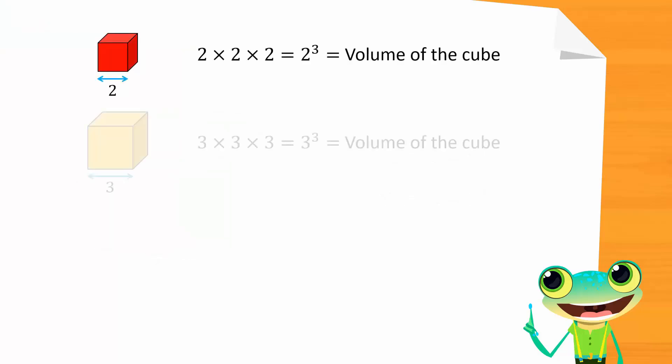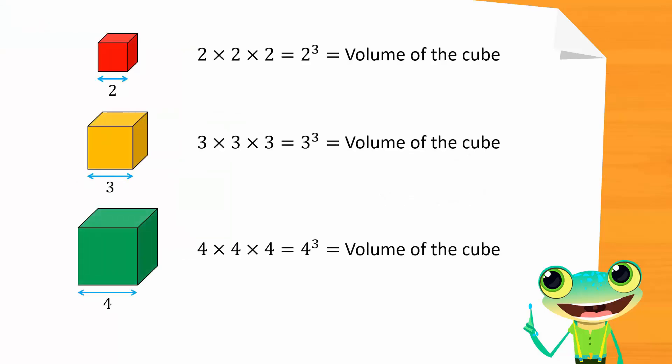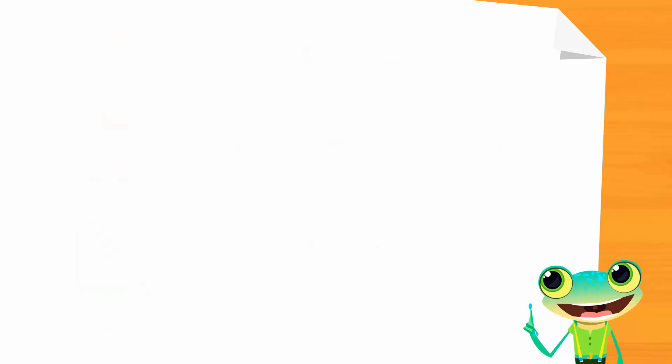2 cubed, 3 cubed, 4 cubed and so on. Therefore, the cube of a number is that number being multiplied by itself once and then again like this. This means that that number will have a power of 3 as shown.